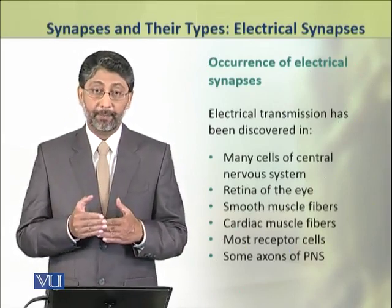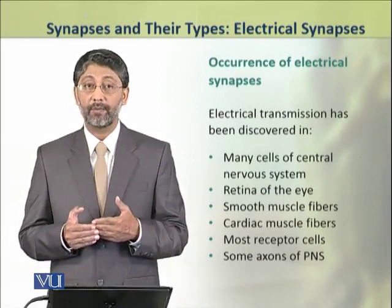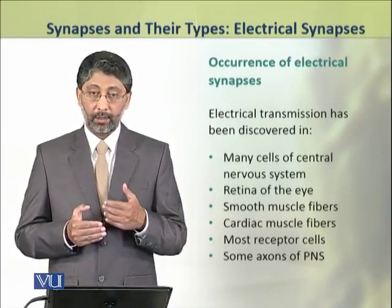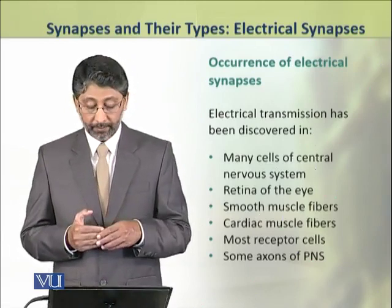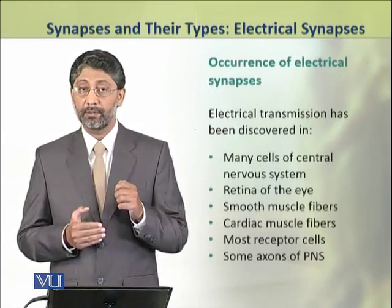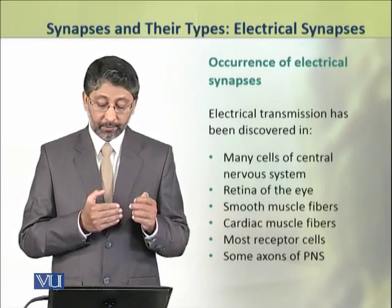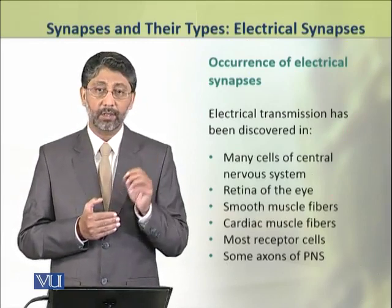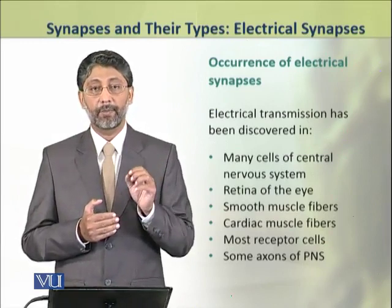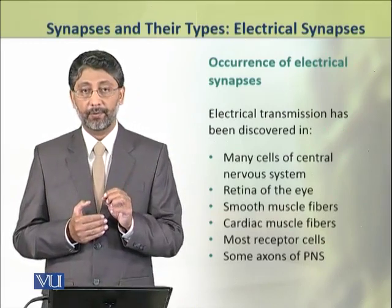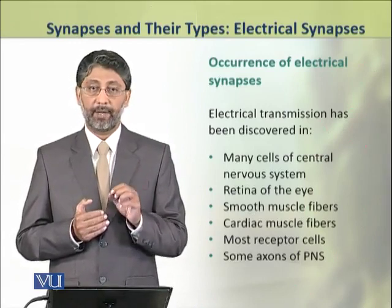Moreover, in many receptors, like the retina of the eye, electrical synapses are present. Similarly, many smooth muscles and cardiac muscle fibers have electrical synapses. Many other receptor cells and some neurons of the peripheral nervous system also contain electrical synapses, through which transmission of signals takes place rapidly.